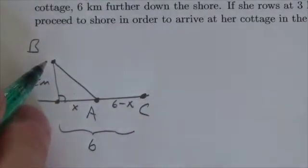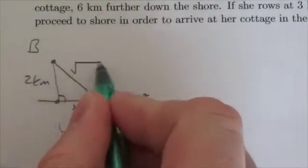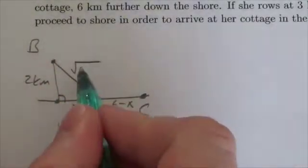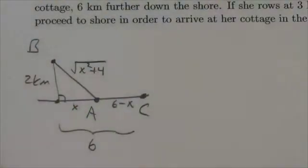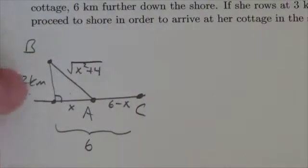Now the length, or the distance that she's going to row the boat here, according to the Pythagorean theorem, will be the square root of X squared plus four. X squared plus two squared. So now what we want to do is create an equation based on the diagram that we've created here that's going to model this.